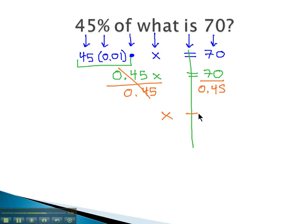When we do, we find out x is equal to... and on our calculator, 70 divided by 0.45 is 155.56, rounding it to two decimal places. And we've answered our question, 45% of what is 70? 45% of 155.56 is 70.